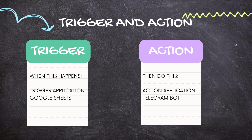Trigger and action are the two most important concepts of Pabbly Connect on which this entire automation and integration will depend. The trigger says 'when this happens,' and action says 'do this.' Our trigger application will be Google Sheets, where we add the post title and post content in a new row, and our action application will be Telegram bot, which will send the message to our Telegram group.